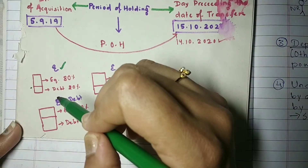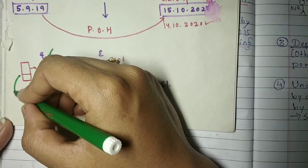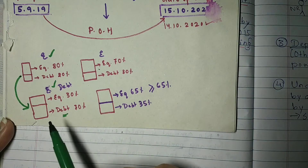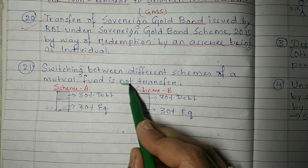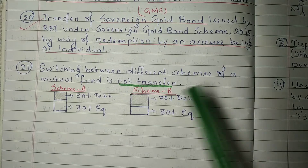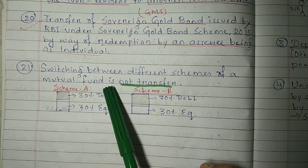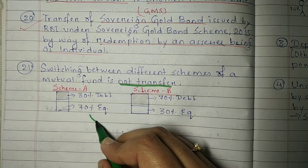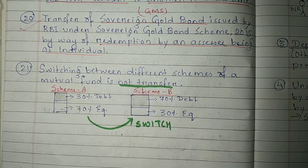Next is point number 21, which deals with mutual funds. Suppose you are in the same mutual fund company and you want to switch from one scheme to another — for example, from Scheme A which had more debentures and more equity, to Scheme B which has a different allocation because you can't take so much risk. If you switch between different schemes of the same mutual fund company, that switching is not regarded as a transfer for capital gains purposes.